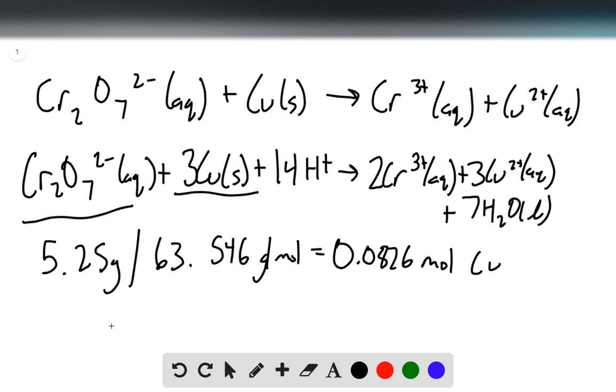Now we can determine our moles of Cr2O7^2- by dividing that by 3 since we have 3 moles of copper for every 1 mole of Cr2O7^2-. That gives us 0.0275 moles of Cr2O7^2-.